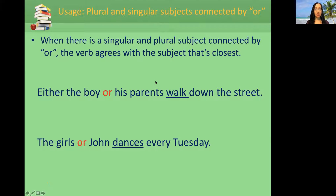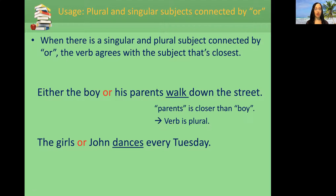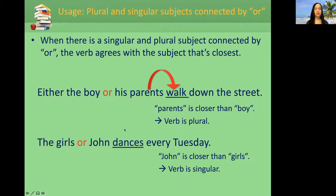When there is a singular or plural subject connected by 'or,' the verb agrees with the subject that's closest. For example: 'either the boy or his parents walk down the street.' Which subject is closest? Parents — parents is closer than boy, so the verb becomes plural. What about 'the girls or John dances every Tuesday'? John is closer than girls, so the verb is singular.